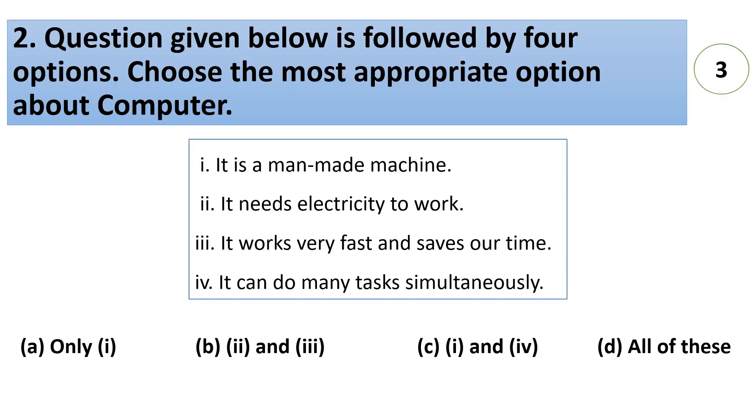Question given below is followed by 4 options. Choose the most appropriate option about computer. A. It is a man-made machine. B. It needs electricity to work. C. It works very fast and saves our time. D. It can do many tasks simultaneously. Answer is D. All of the options given below are correct.